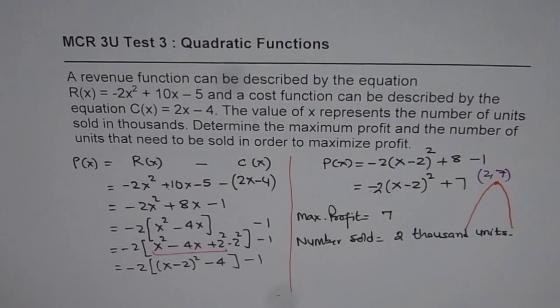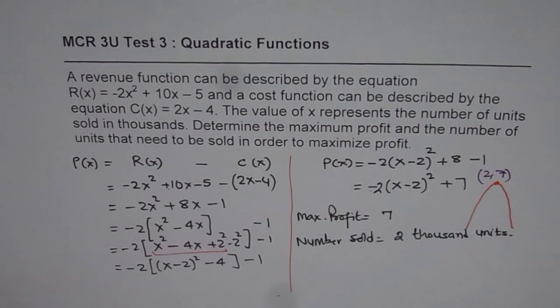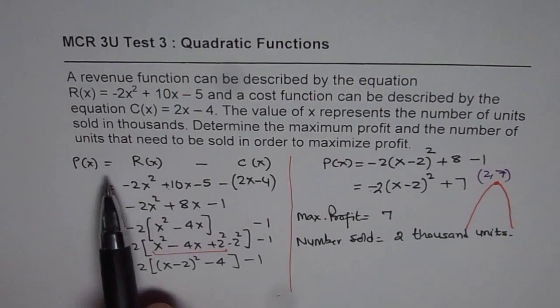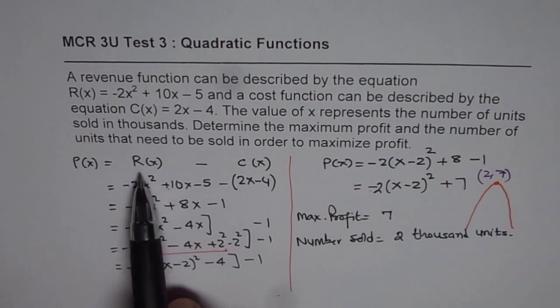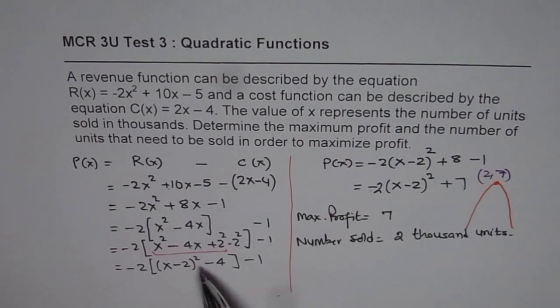So that is how we can solve this particular question. So basically write down the profit function, which is difference of revenue and cost. And then, complete the squares to find the maximum for the given function. I hope that helps. Thank you.